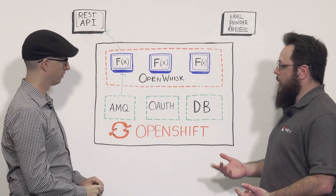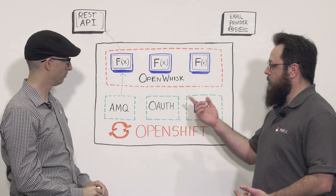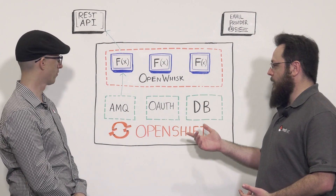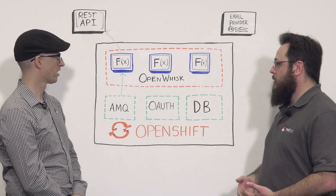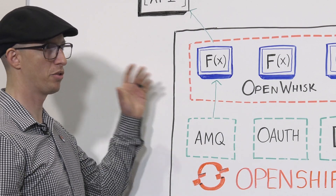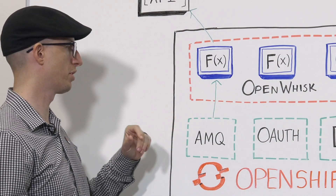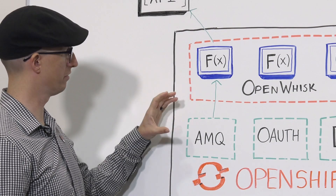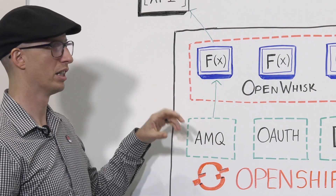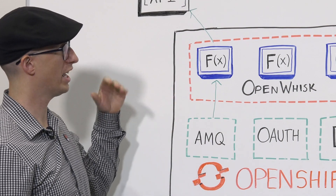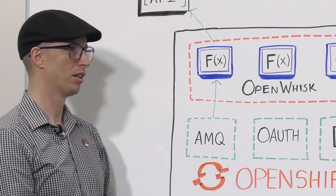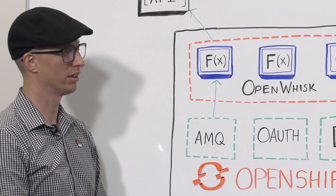How does my function know about the AMQ event? You would define your function, and then the trigger and rules, which will define how it monitors the AMQ messaging queue, and based on that, it would trigger your function with the defined parameters where you can then act on them.